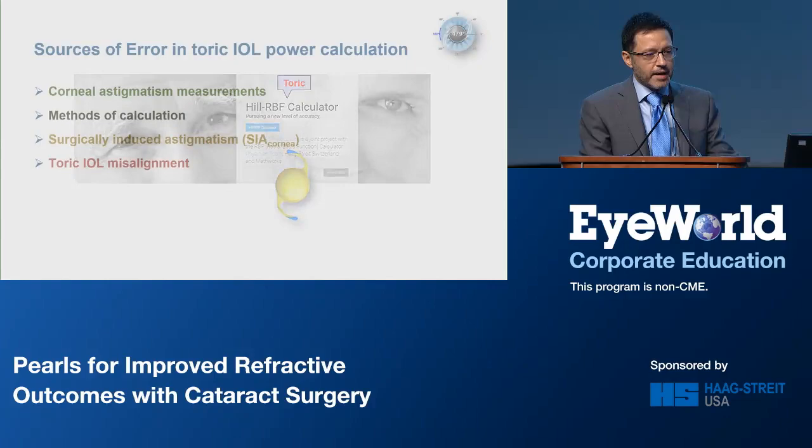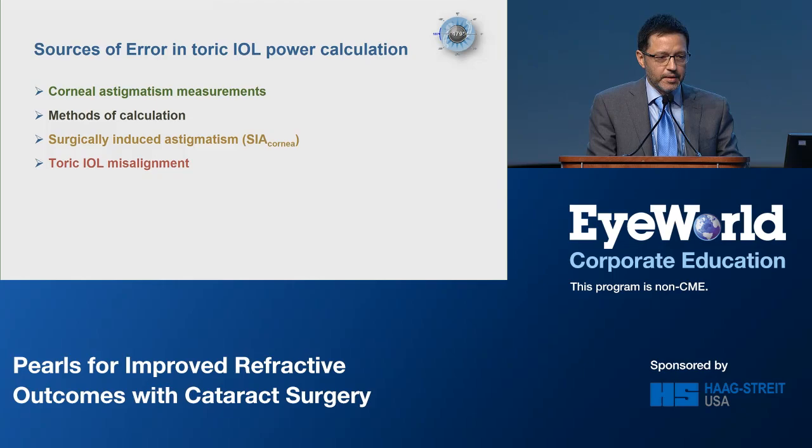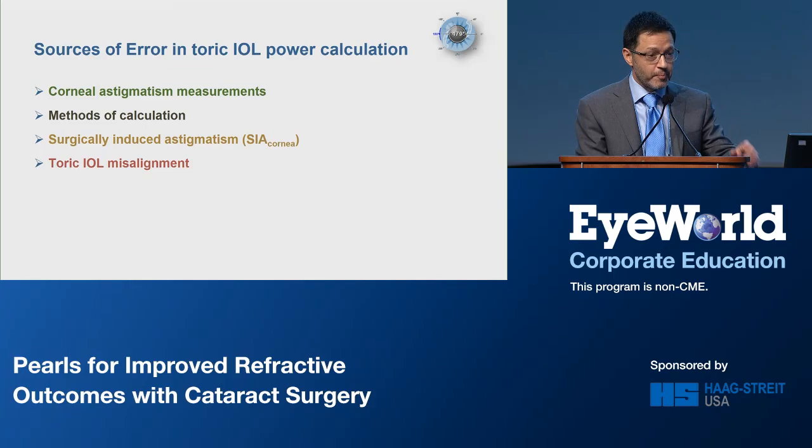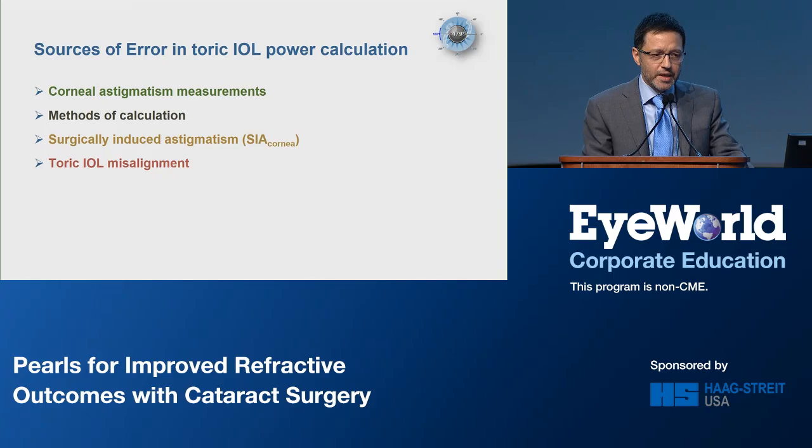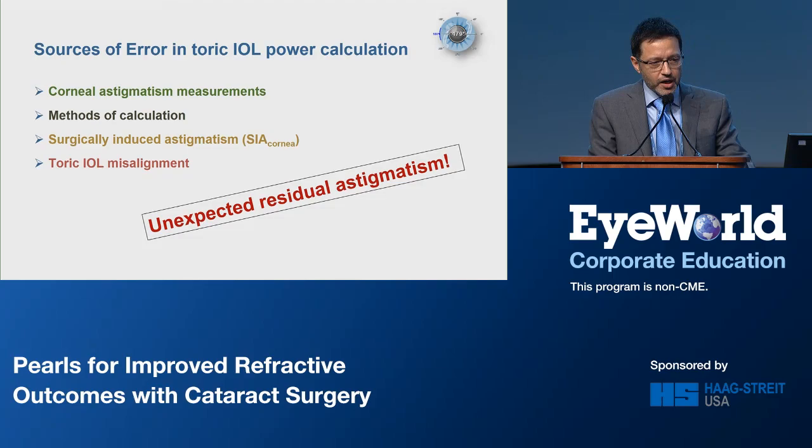Toric calculators are considered to be the choice for these patients. However, the results following their implantations can be sometimes unpredictable since corneal astigmatism measurements, the methods of calculation, surgically induced astigmatism, and Toric IOL misalignments are all factors that might contribute to unexpected residual astigmatism. Today I want to focus on the methods of calculation.